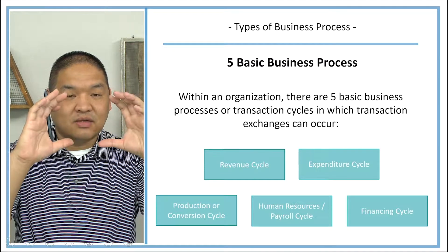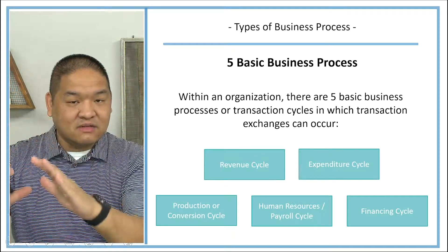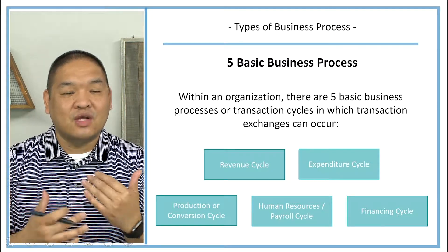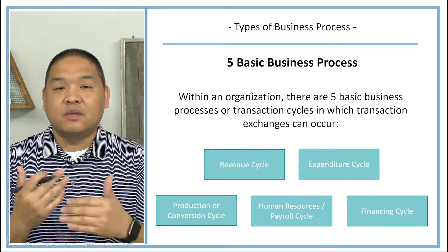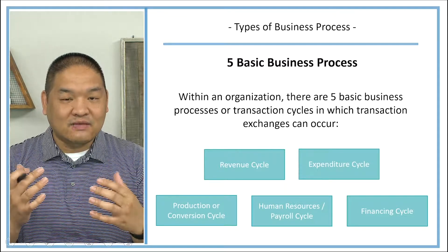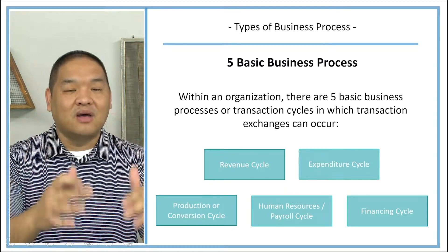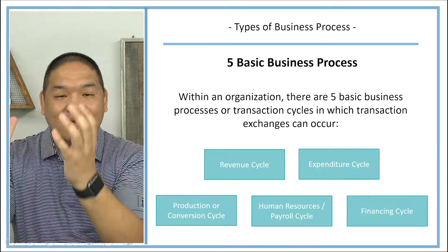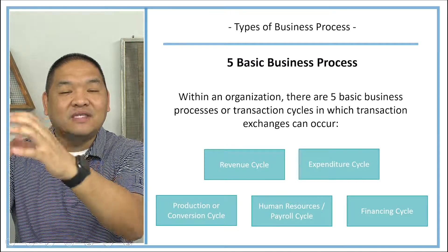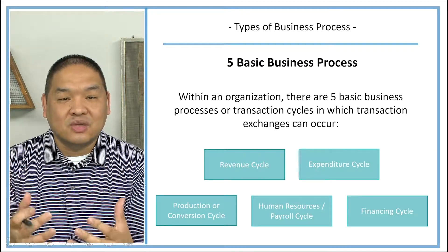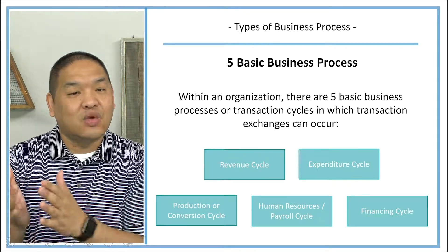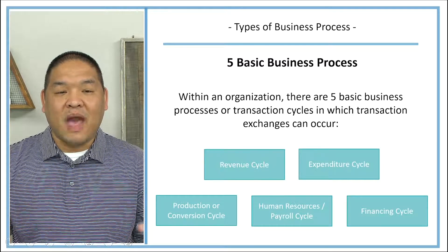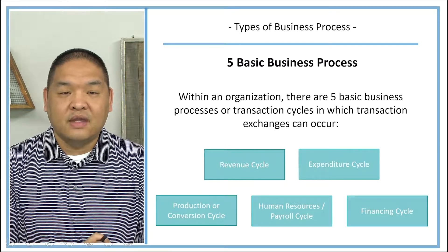All the tasks associated with selling constitute the revenue cycle; all the tasks related to payments form the expenditure cycle. The reason we break them up this way is because these transactions are very much related and, in some respects, very redundant. What we do in the revenue cycle is pretty much what we always do — and the same goes for the expenditure cycle. These cycles contain interrelated, interconnected activities or tasks.